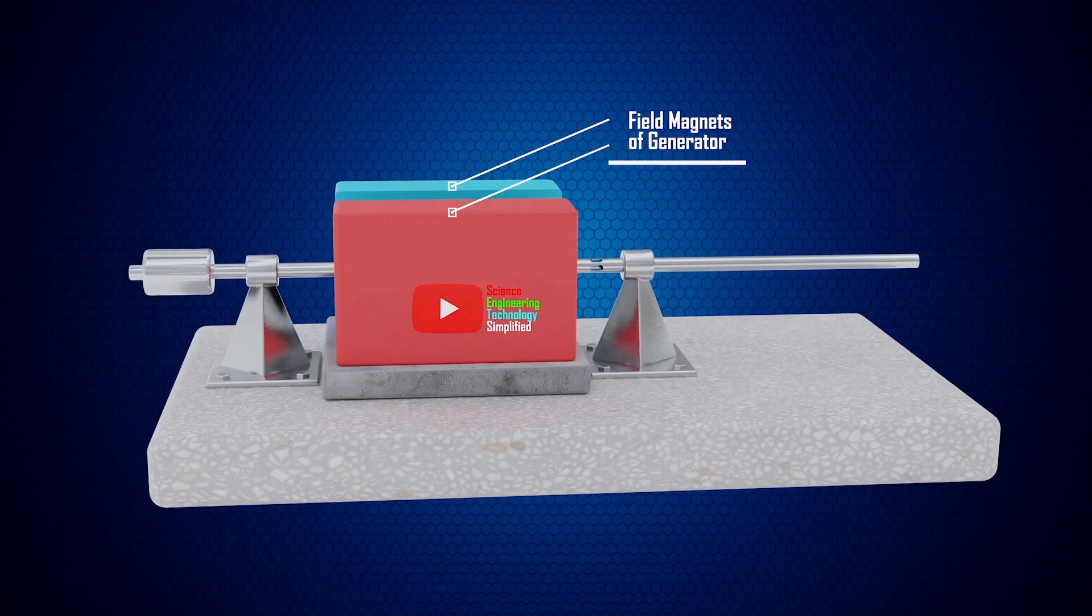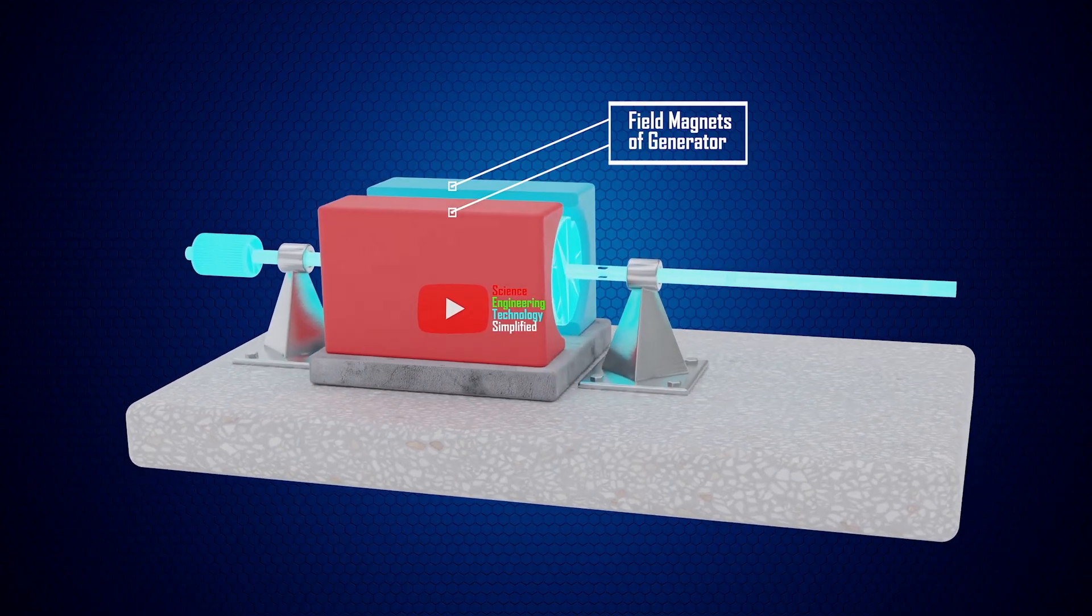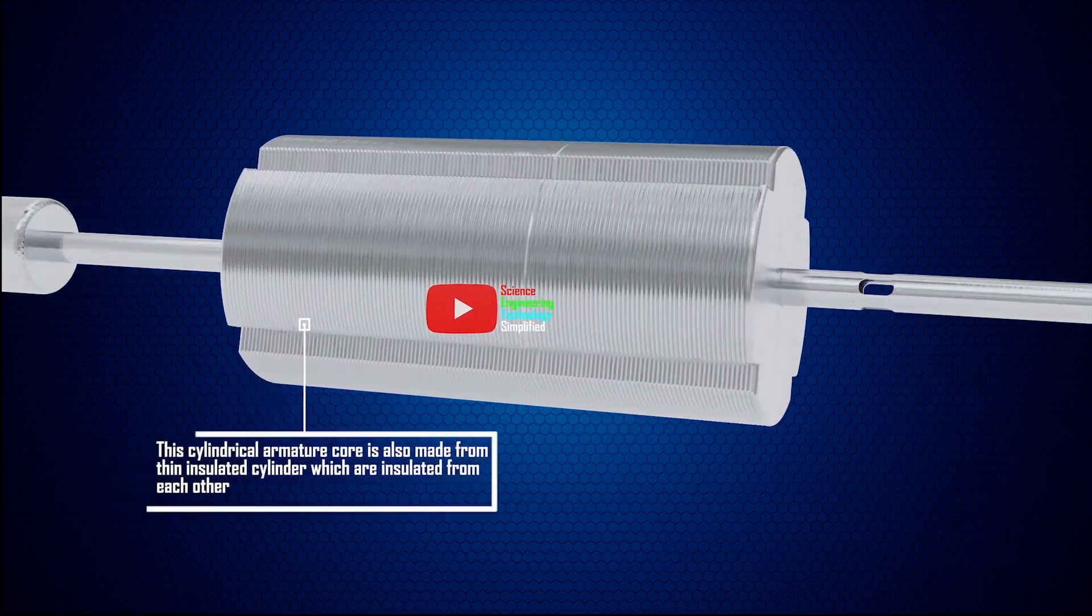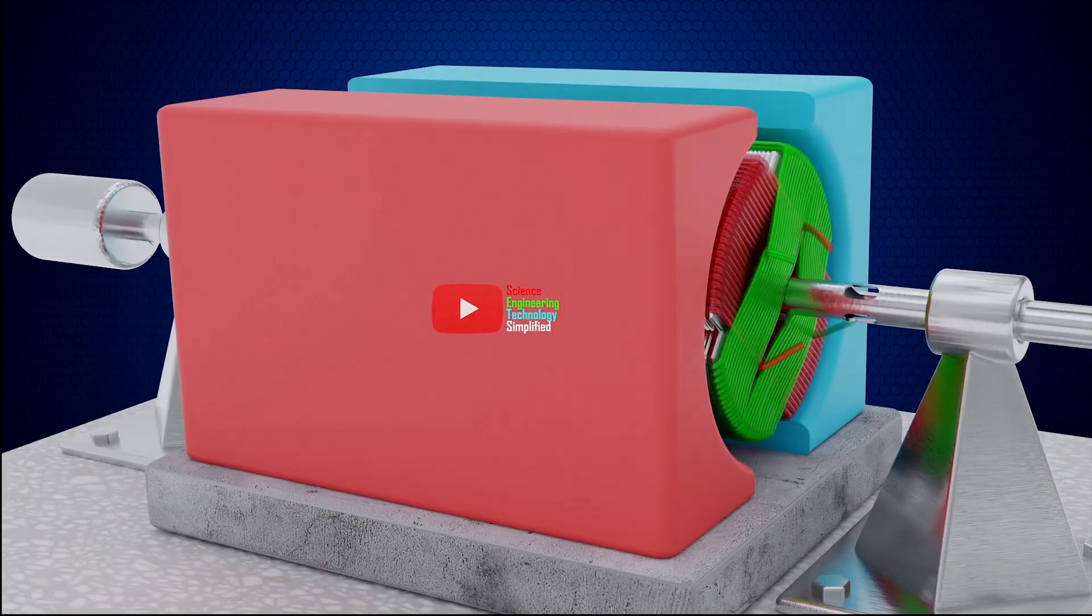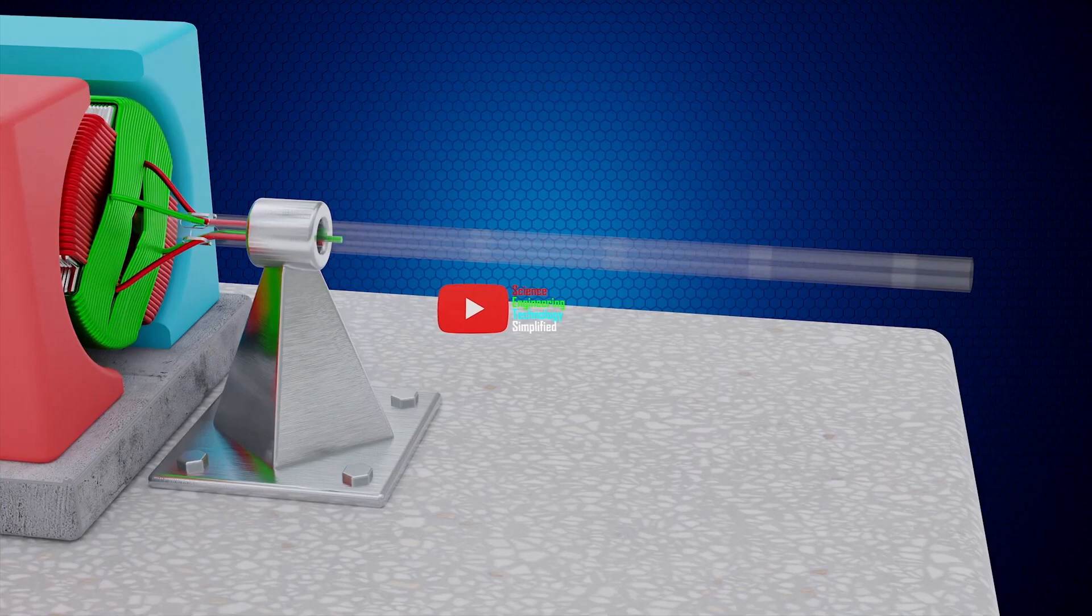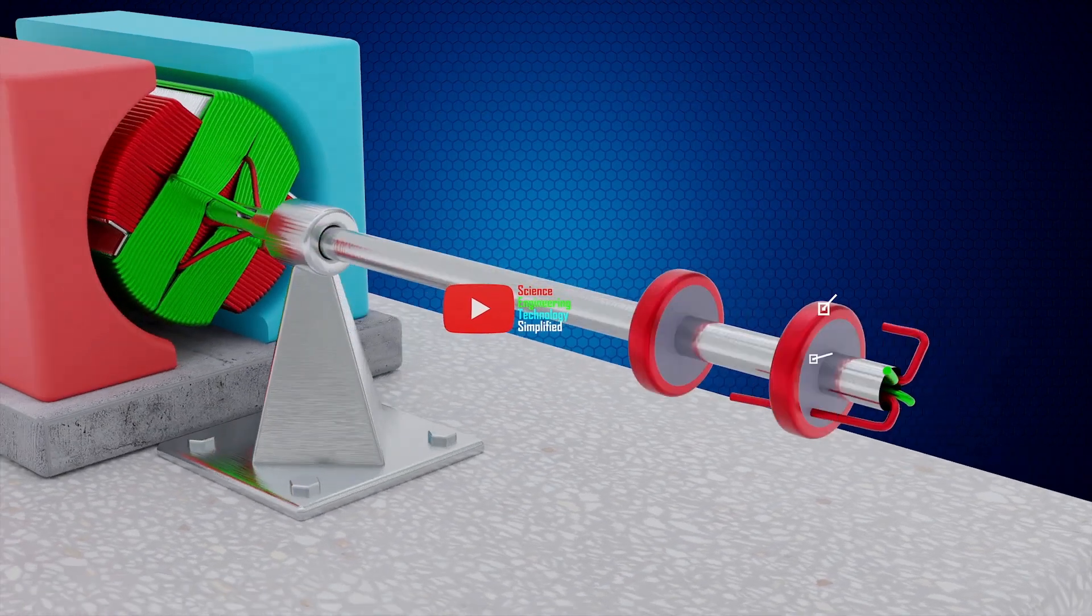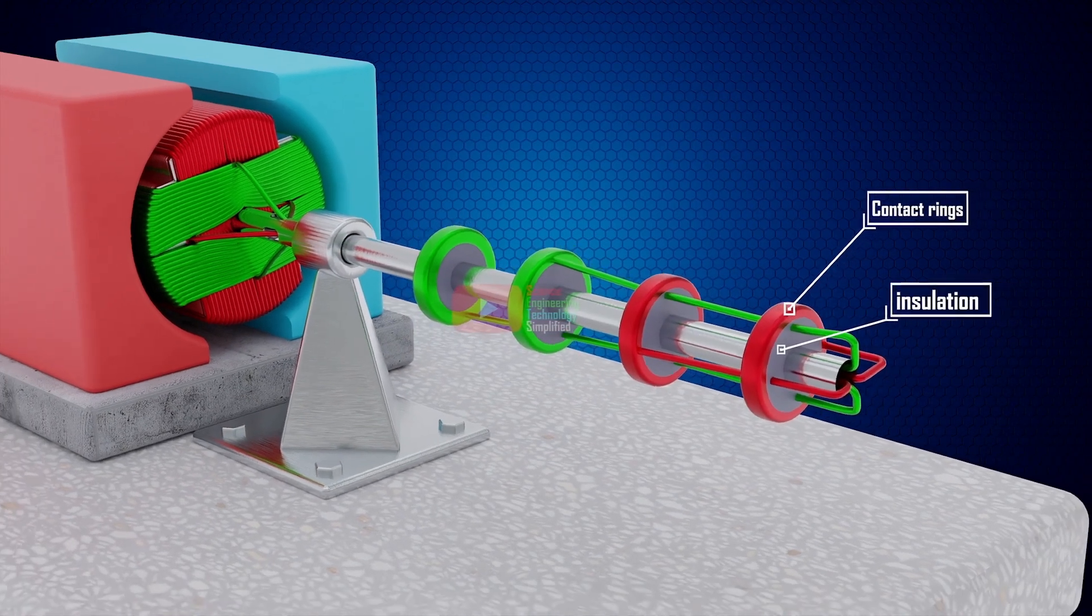The alternating current generator. Here, we have field magnets and a cylindrical armature core. This cylindrical armature core is split and is wound with two coils. The free ends of each coil are carried through the shaft and are connected to the insulated contact ring.